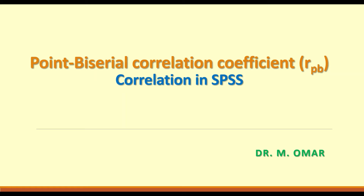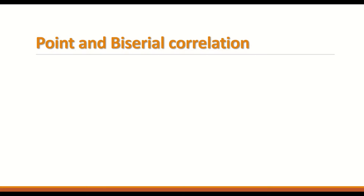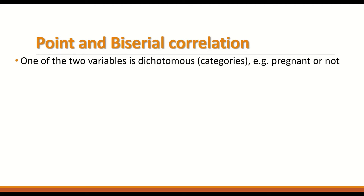Point Biserial Correlation Coefficient, abbreviated as rpb. In fact, there are two tests: the Point Biserial Correlation Coefficient and the Biserial Correlation. In both tests, one of the two variables you want to find the correlation between is dichotomous — meaning it has two binary categories, such as pregnant or not pregnant, yes or no, or dead or alive.